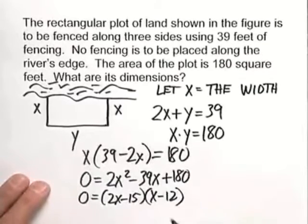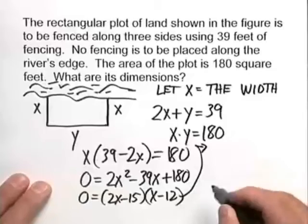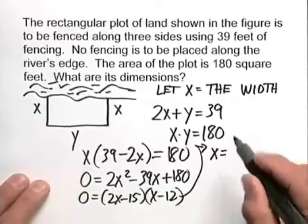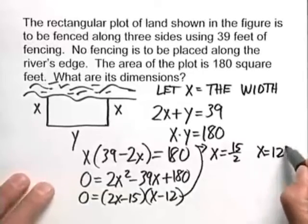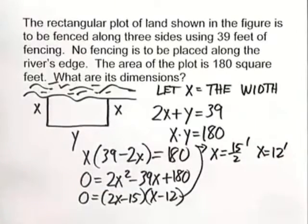And remember that x is our width. So one width will give us x being 15 halves, and the other one will be x equals 12. So our width in those two cases are 7.5 feet and 12 feet.